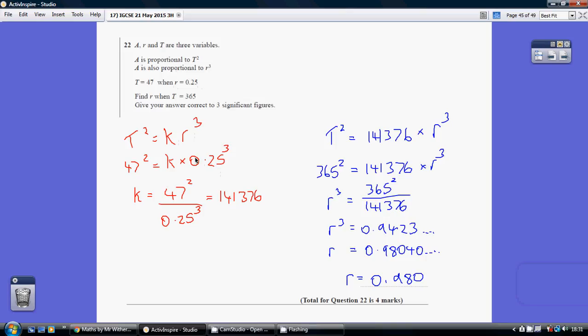So substituting those in and rearranging that, that allows me to work out that the constant K is 141,376. So going back to my opening provisional formulae, I've now got T squared equals 141,376 lots of R cubed.